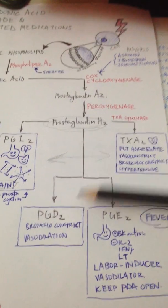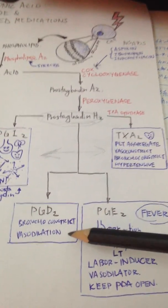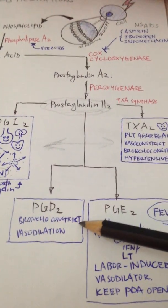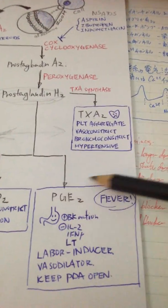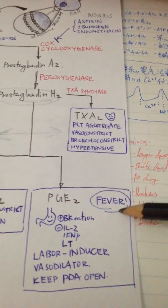We also have prostaglandin D2, which bronchoconstricts as well as vasodilates, and prostaglandin E2. This one's very important because it causes fever.